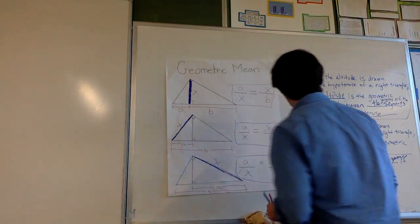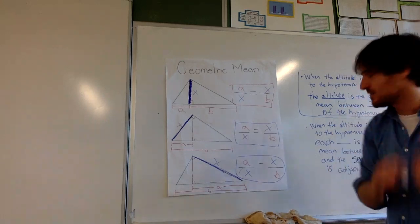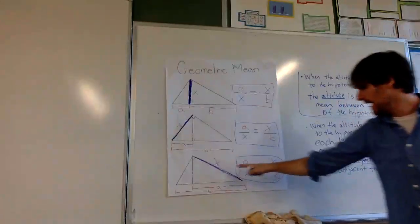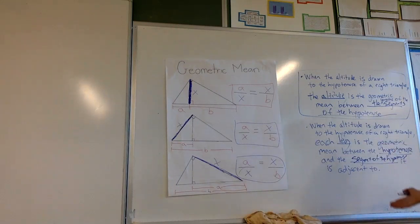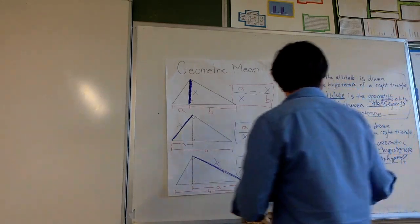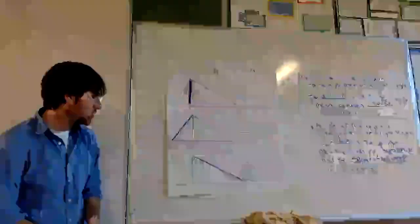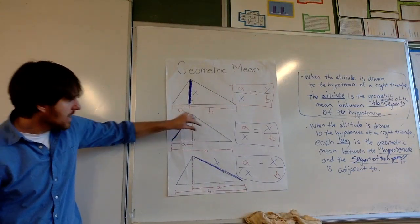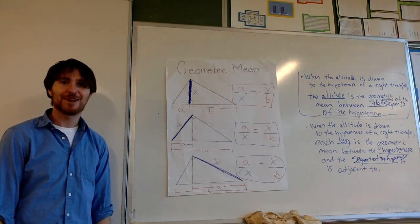Let's go into the rest of this theorem. When the altitude is drawn to the hypotenuse of a right triangle, it's a corollary in the book because it follows the similarity results. Each leg is the geometric mean between the whole hypotenuse and the length of the segment of the hypotenuse adjacent to it.